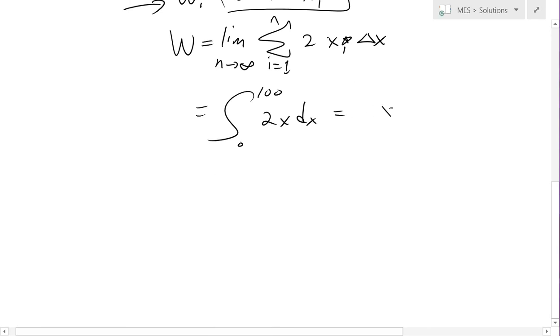this equals 2, integral of 2x, that's just going to be x squared over 2, and there's a 2 in there. So the 2's will cancel. Plug this in, you're going to get, now, this is going to be 100 squared, and then put a 0, that just cancels.